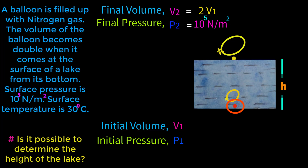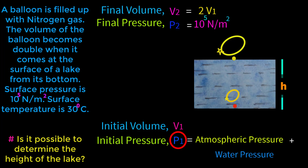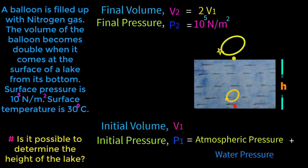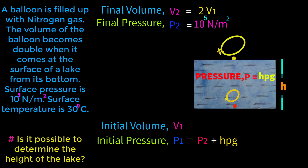At the initial bottom point, two types of pressure are working on the balloon simultaneously: water pressure and atmospheric pressure. Therefore, P1 equals atmospheric pressure plus water pressure. We already considered atmospheric pressure as P2, so we write P1 = P2 + water pressure. For water pressure, we can write hρg, since at a depth h inside a liquid the pressure equals hρg.